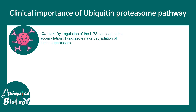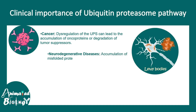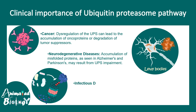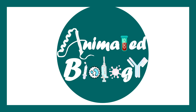Clinically, the ubiquitin proteasome pathway is important in cancer — dysregulation of the UPS pathway has been associated with cancer. It is also associated with neurodegeneration; for example, Alzheimer's disease and Parkinson's disease have impairment in ubiquitin proteasome machinery, leading to protein aggregation. Additionally, some pathogens inhibit the proteasome pathway to prevent degradation, so proteins are never displayed on class I MHC molecules — that's why many infectious pathogens suppress the proteasome pathway.